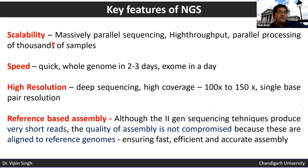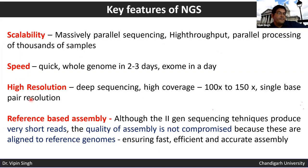The key features of NGS are: scalability — it is massively parallel sequencing with high-throughput parallel processing of thousands of samples; and speed — it is much quicker than Sanger sequencing. You can sequence a whole genome in two to three days, or even 20 to 30 minutes, and an entire exome in a day.